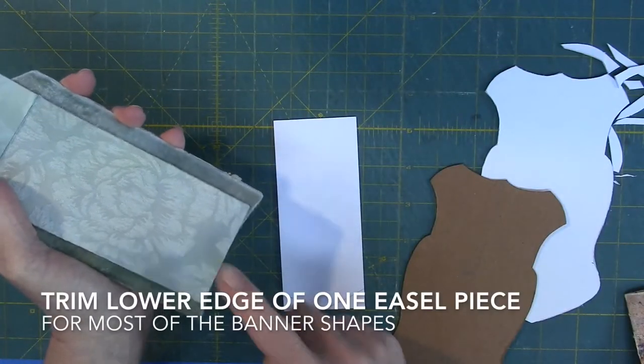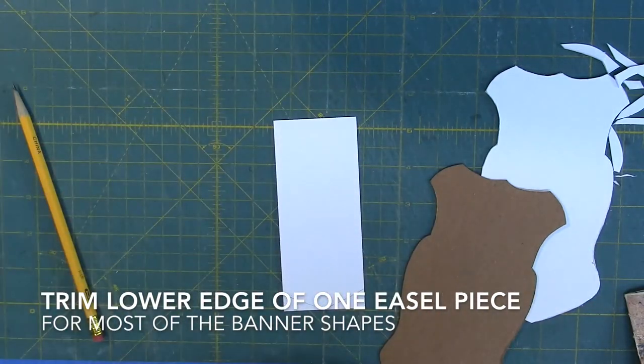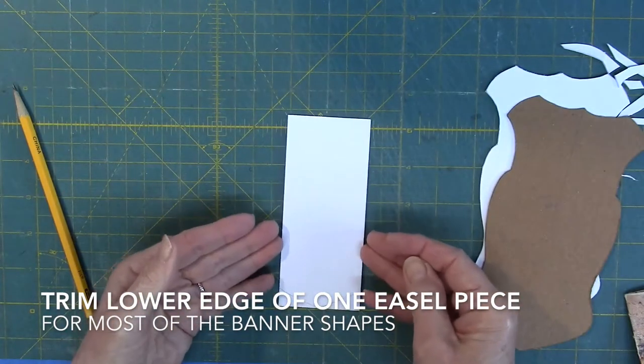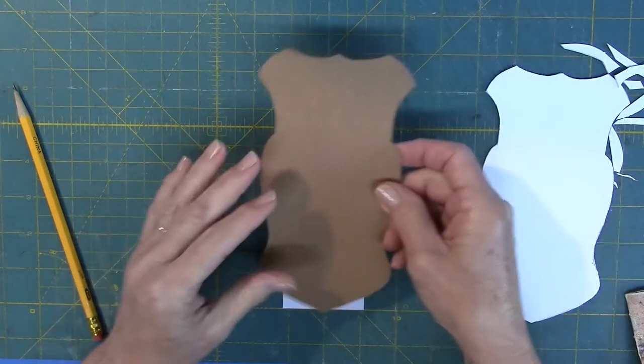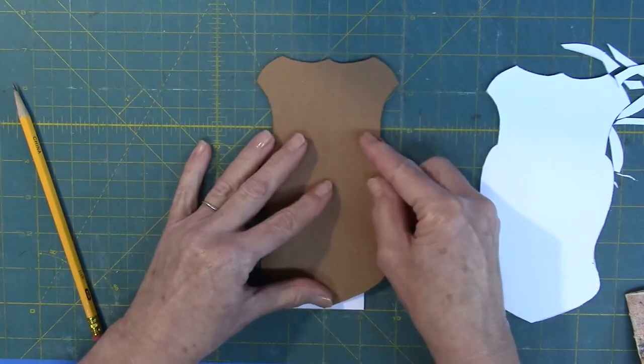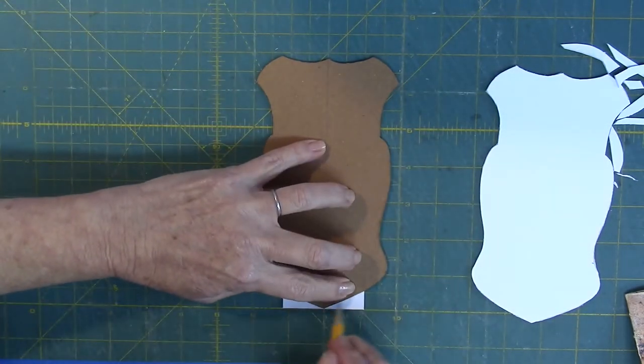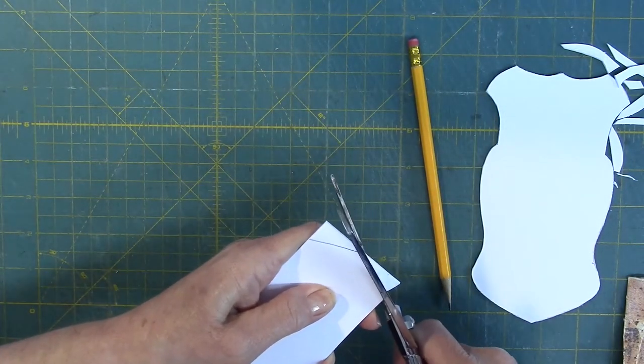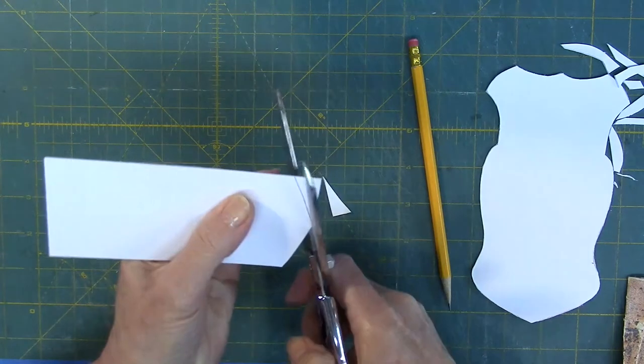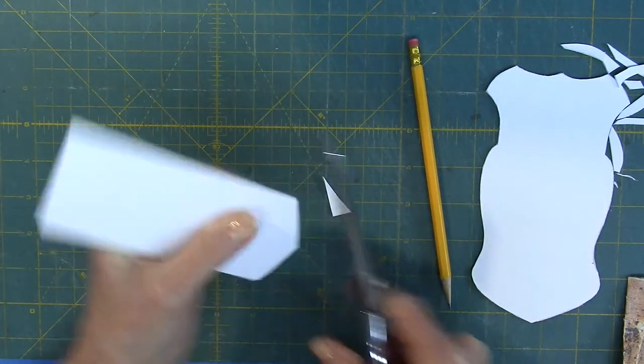Some easels will require one piece to be trimmed along the lower edge in order to match the banner lower edge. To do this, place one of the easel pieces centered onto a grid-lined workspace, then place the banner shape centered over the easel. Trace and trim away the excess cardboard. The only token that does not need one of the easel pieces to be trimmed is the language of flowers and the melting shape designs.